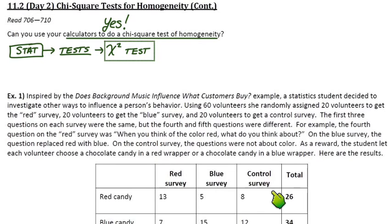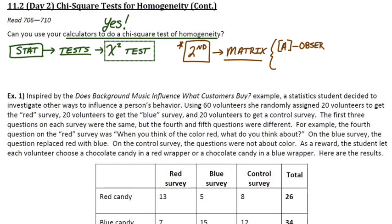So since we're dealing with two-way tables now, we've got to store our observed counts and our expected counts in a matrix. So on our calculator, we're going to go to second and then the matrix button, second matrix, and then we're going to put our observed counts in matrix A and our expected counts in matrix B.